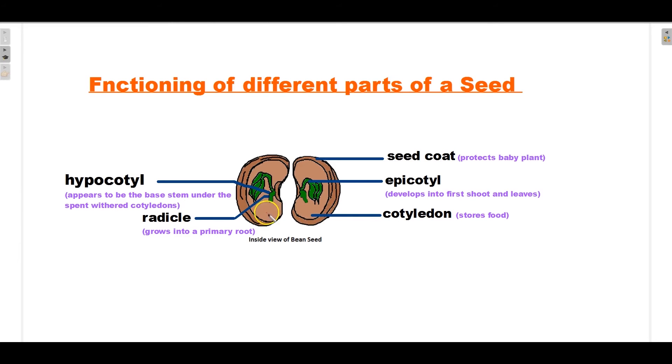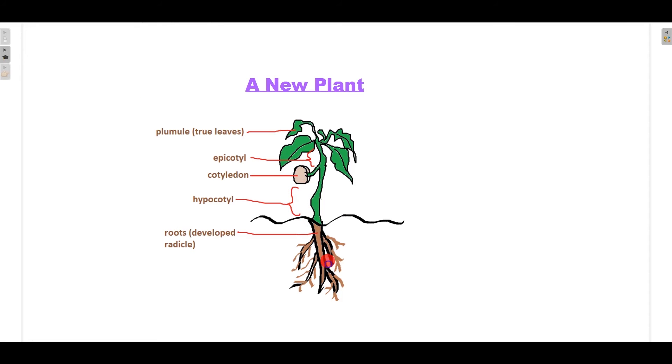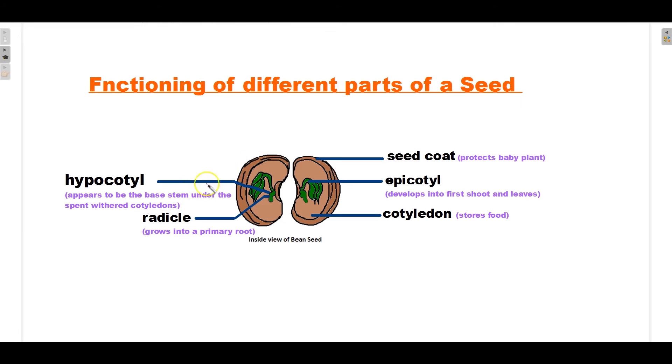Cotyledons help in storing food. Radical grows into a primary root. Hypocotyl appears to be the base stem underneath within cotyledon. This is the portion between the cotyledon and the radical.